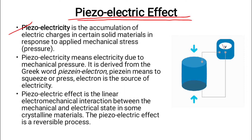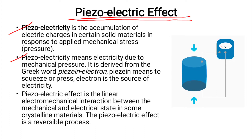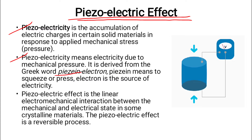Piezoelectricity means electricity due to mechanical pressure — the electricity generated because of mechanical pressure is called piezoelectricity. It is derived from the Greek word 'piezin', meaning to squeeze or press, and 'electron', the source of electricity. These two words combine to form 'piezoelectricity'.